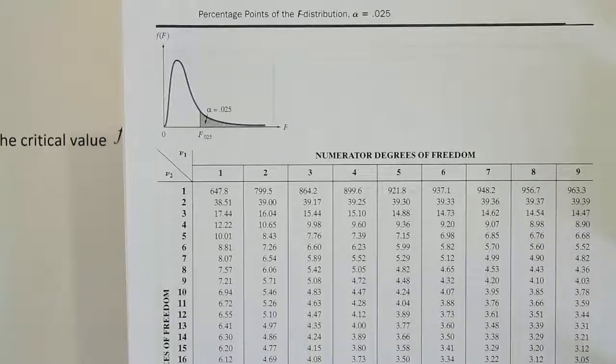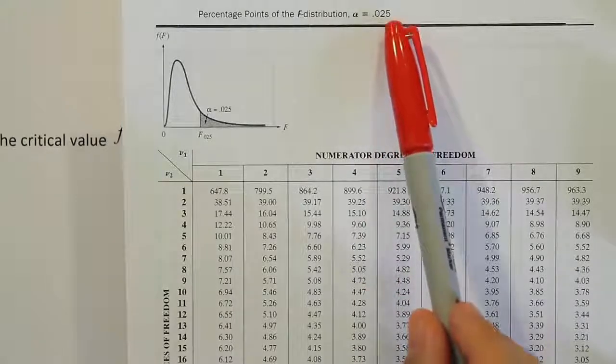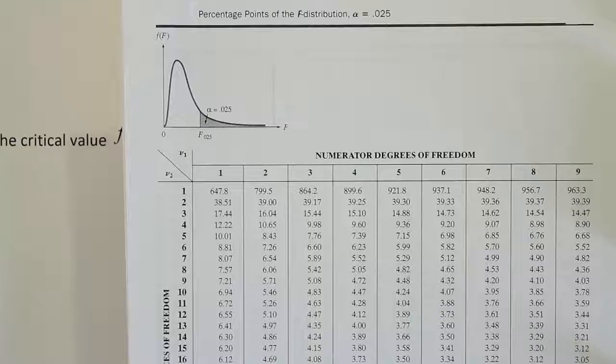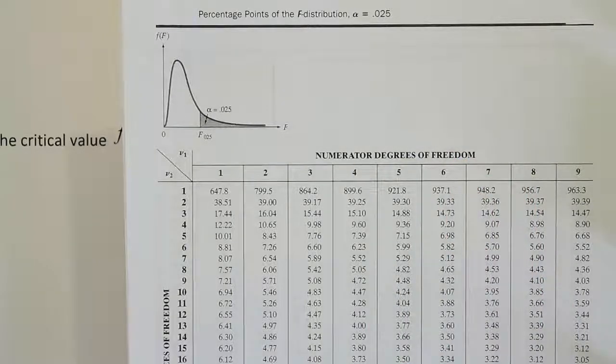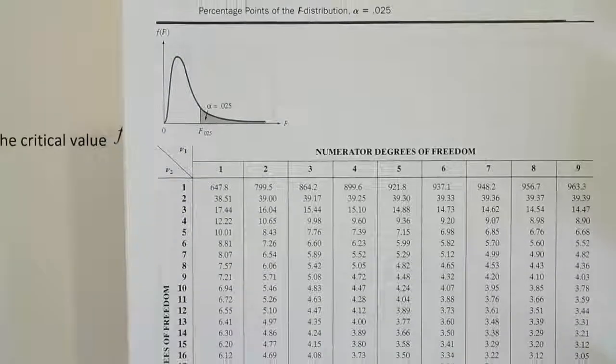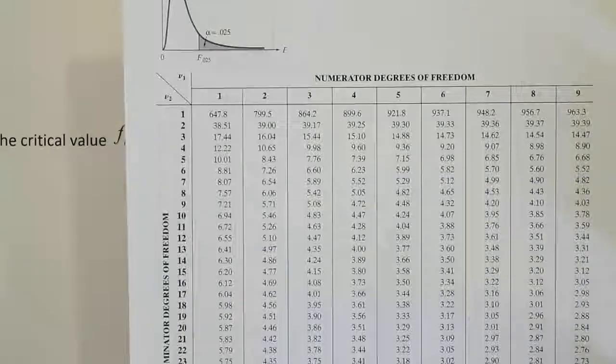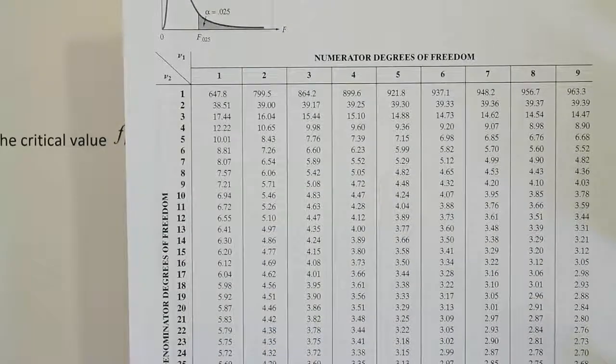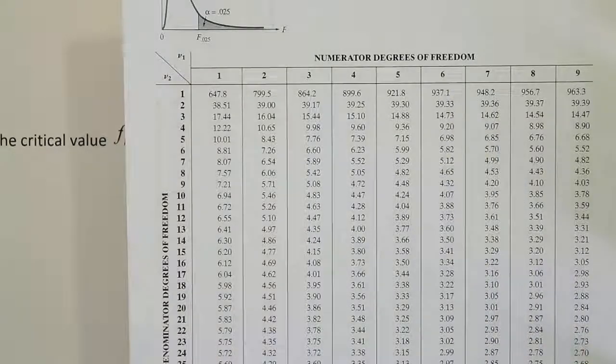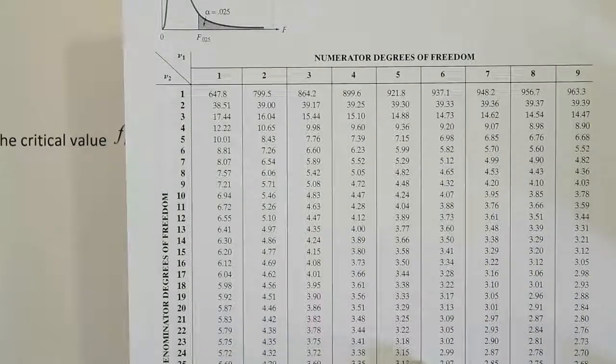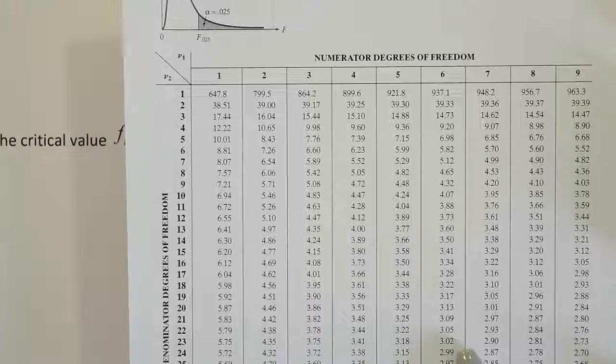Okay, so we're at our 0.025 table and we need to look up degrees of freedom for the numerator of 6. So that's this column here, and then we need to scroll down until we see degrees of freedom 24 on the other side, so on the denominator. Okay, so let's do that real quick. Okay, so in the 6 column down to where it's 24, we see the answer 2.99.